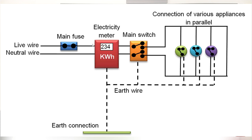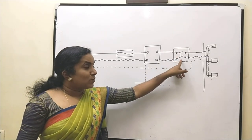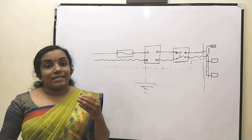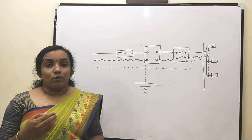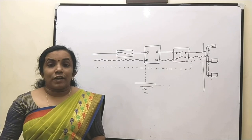After the company fuse, the cable is connected to a kilowatt-hour meter, usually mounted on the walls of the house. From the meter, connections are made to the main switch, which is a double pole switch. A double pole switch disconnects both the live and neutral wires simultaneously, providing extra safety during maintenance work in the house. From here, wires go to different parts of the house.